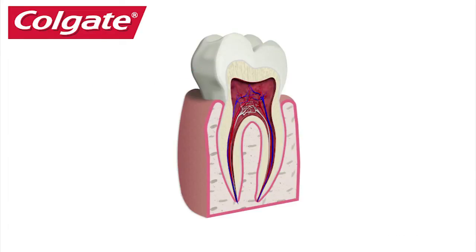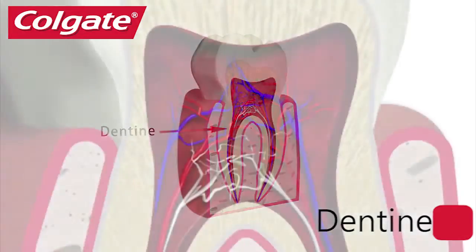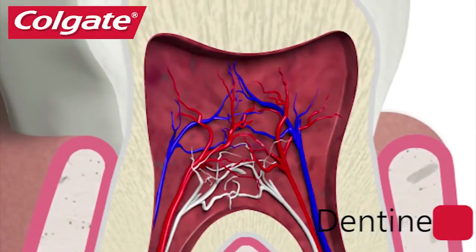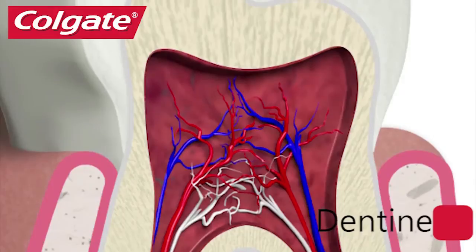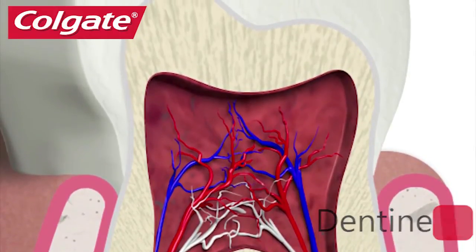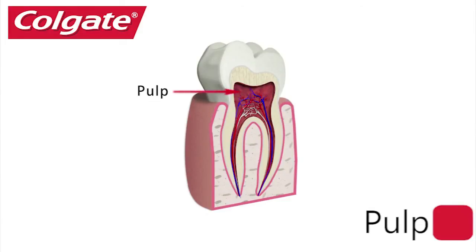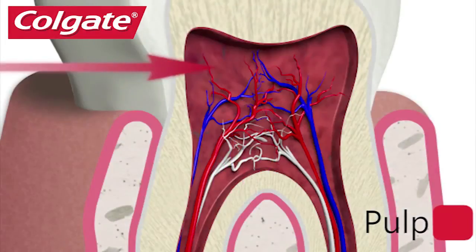Underneath the enamel is a layer of dentine, which forms the bulk of the tooth. It is less mineralised than enamel, and its colour determines your tooth's shade. There are millions of tiny tubes that lead directly from the outer edge of the dentine to the core of the tooth — the dental pulp. Pulp contains soft tissue found in the centre of all teeth, where the nerves and blood vessels are.